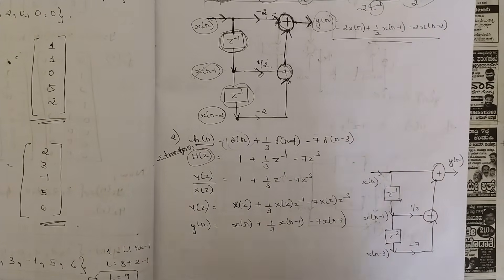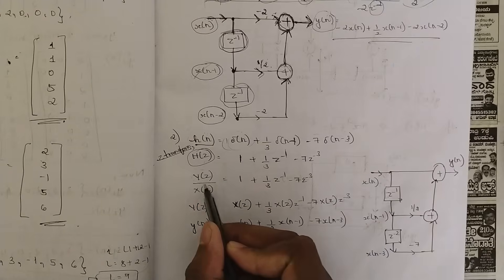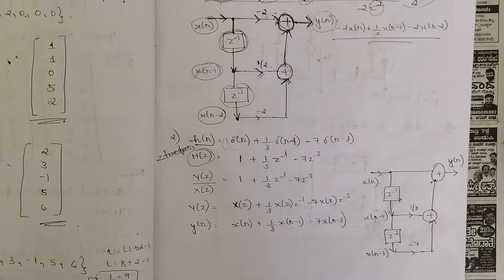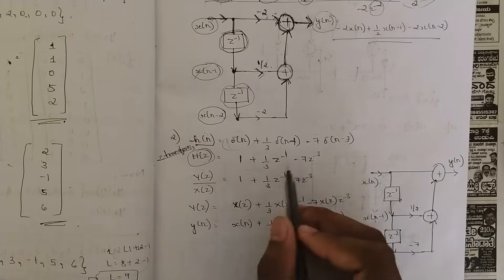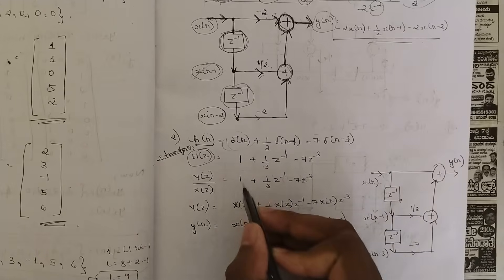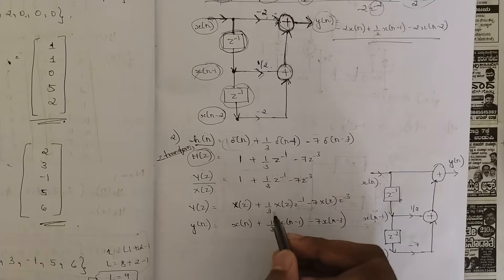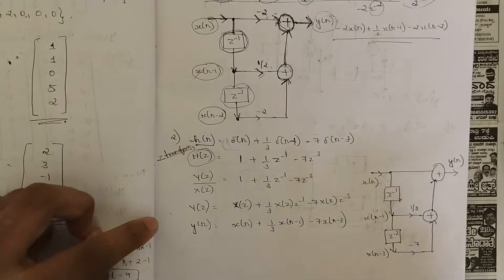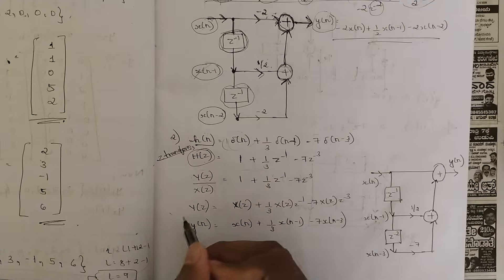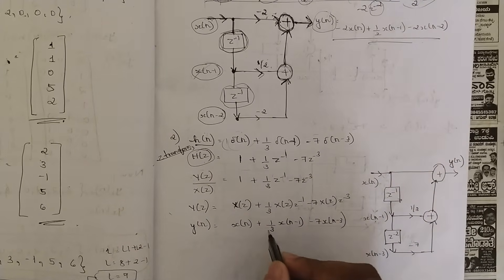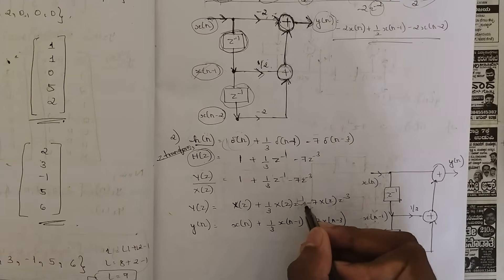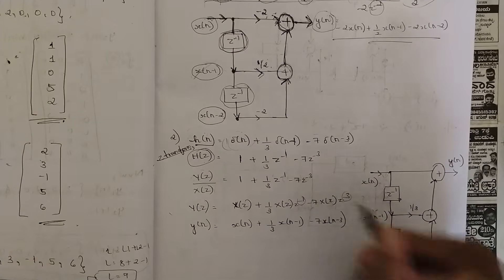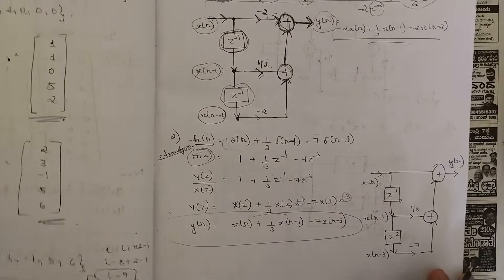H(Z) is the transfer function, which equals output Y(Z) divided by input X(Z). So Y(Z)/X(Z) = 1 + (1/3)·Z⁻¹ - 7·Z⁻³. Cross-multiplying: Y(Z) = X(Z)·[1 + (1/3)·Z⁻¹ - 7·Z⁻³] = X(Z) + (1/3)·X(Z)·Z⁻¹ - 7·X(Z)·Z⁻³. Now take the inverse Z-transform to get Y(N): Y(N) = X(N) + (1/3)·X(N-1) - 7·X(N-3). Now write the direct form structure for this equation.